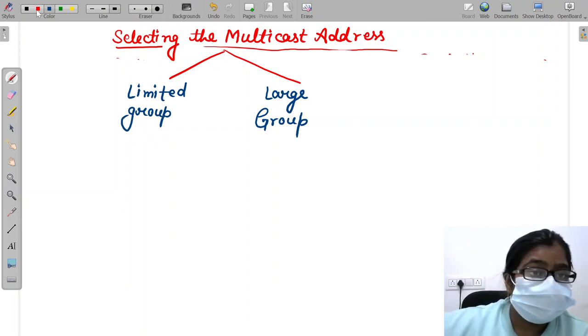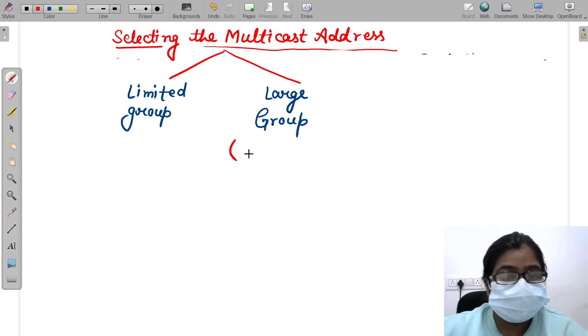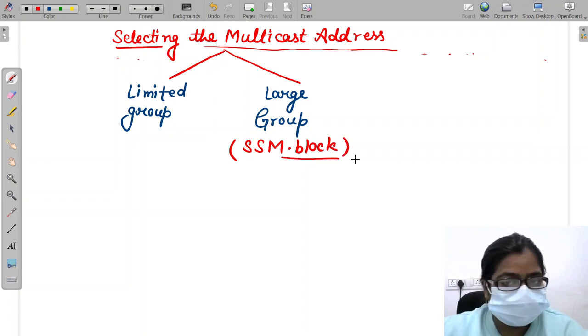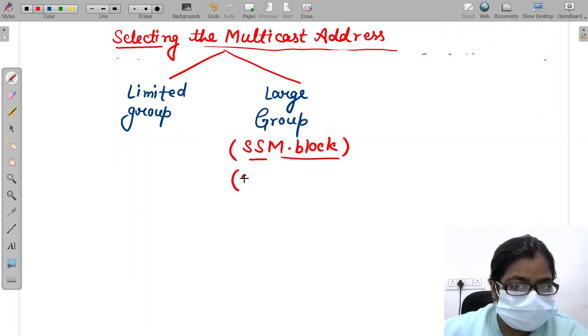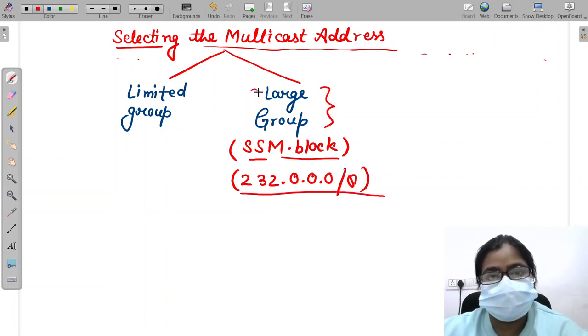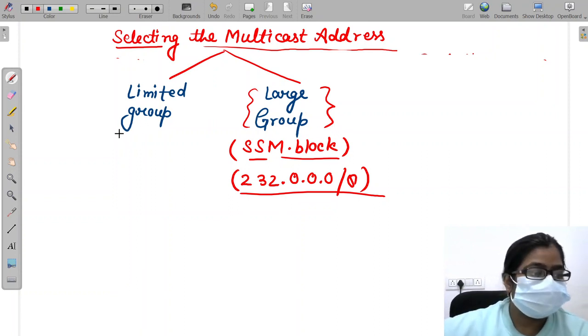For large group, what we have to do is simply take that multicast address in the SSM block. SSM block I have already discussed - all the blocks range-wise in the previous video, so do refer to that. SSM block is in the range 232.0.0.0/8. So this is all about the large group.